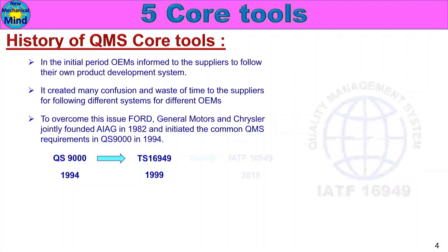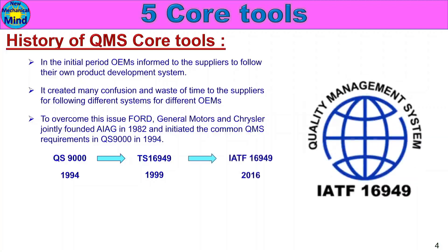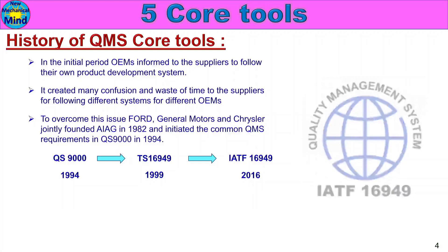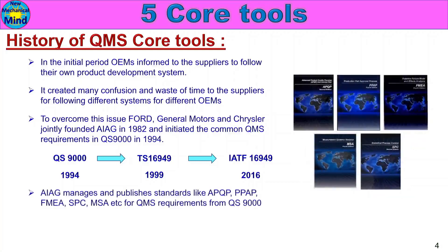This was further updated to IATF 16949 in 2016. AIAG also manages and publishes standards like APQP, PPAP, FMEA, SPC, MSA, etc., as Quality Management System requirements starting from QS 9000.